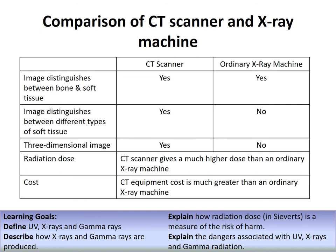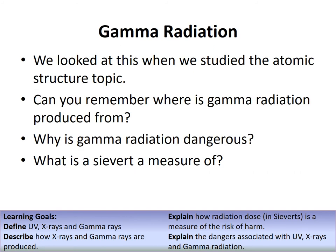Gamma radiation comes from the nucleus - all nuclear radiation does. It is dangerous for the same reason as X-rays: it is highly ionizing and high-energy, and can cause severe damage to living tissue.